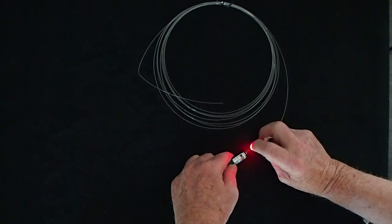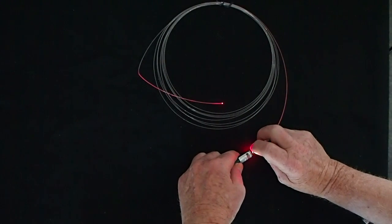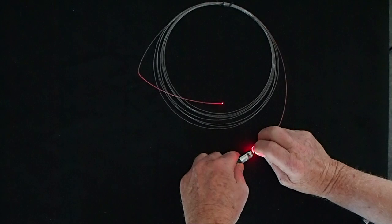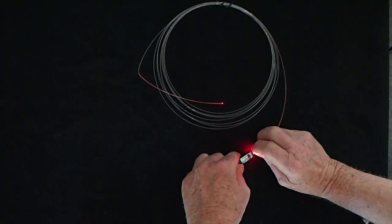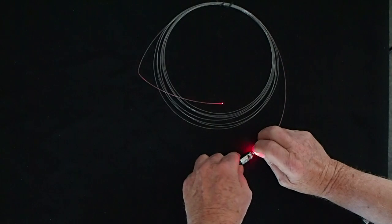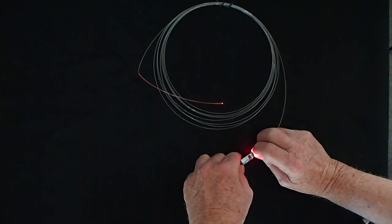Use a standard laser pointer. You just hold the fiber in the end of the laser pointer and you can see the light being transmitted through the fiber. It's of course nowhere near as spectacular as my high powered visual fault locator.